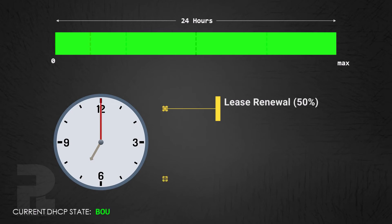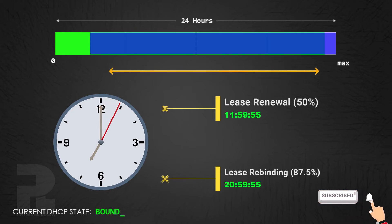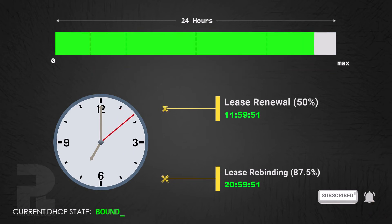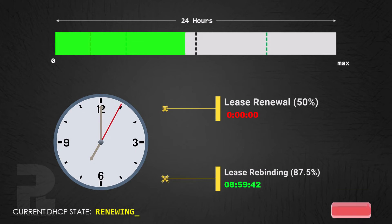The final timer is the DHCP lease rebinding timer which controls lease rebinding. The default value is 87.5% of the lease — that is, after the first half of the last quarter of the lease expiration time. This timer expires when a DHCP client does not receive any response from a DHCP server after sending multiple DHCP request messages for its lease extension.